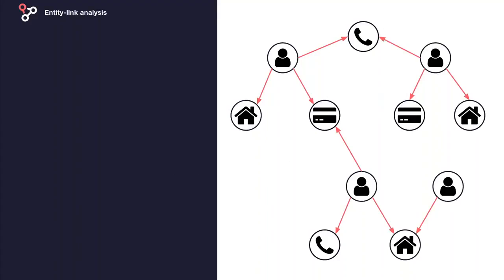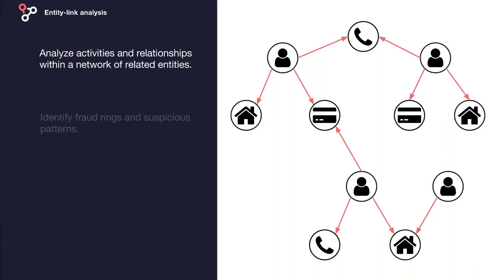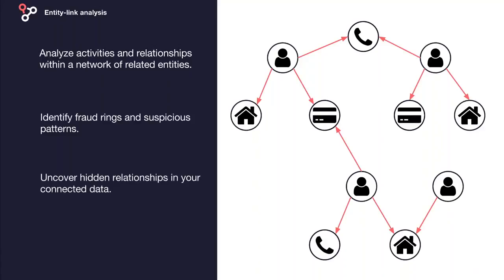On the entity link layer, Linkurious and Neo4j allow you to analyze activities and relationships within a network of related entities. This is essential to discover the networks associated with a suspicious account in order to determine if it's a limited case or part of something bigger. You can use rule-based analytics to identify fraud rings and suspicious patterns, and uncover hidden relationships in your connected data. Now I'm going to let Mohsen do a brief demo of what fraud detection looks like with Linkurious and Neo4j.